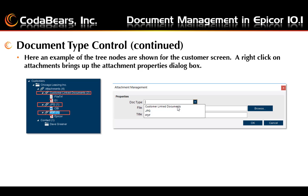Here's an example of the tree nodes shown for the customer screen. A right-click on the attachment brings up the attachment properties dialog box. In this example we can see there are several types of customer linked documents, and the customer linked documents has its own separate node. The JPEG has a separate node and the PDF has a separate node. Right-clicking on the attachments node itself brings up the attachments dialog box. If you right-click on one of the specific document type nodes, the document type drop-down box is prefilled and the document automatically will be in that node.